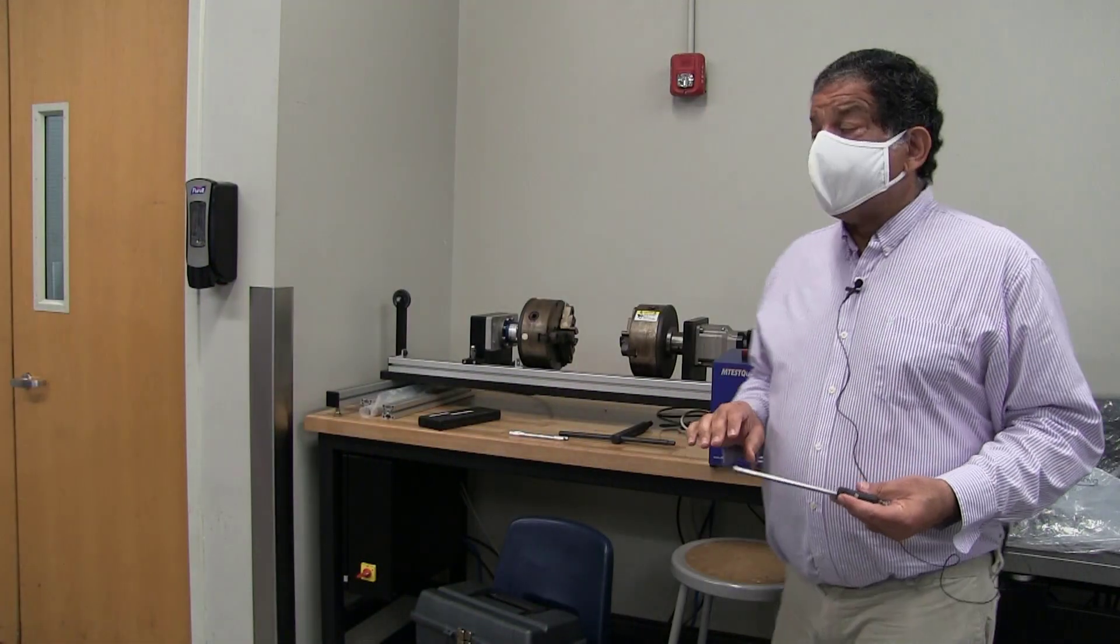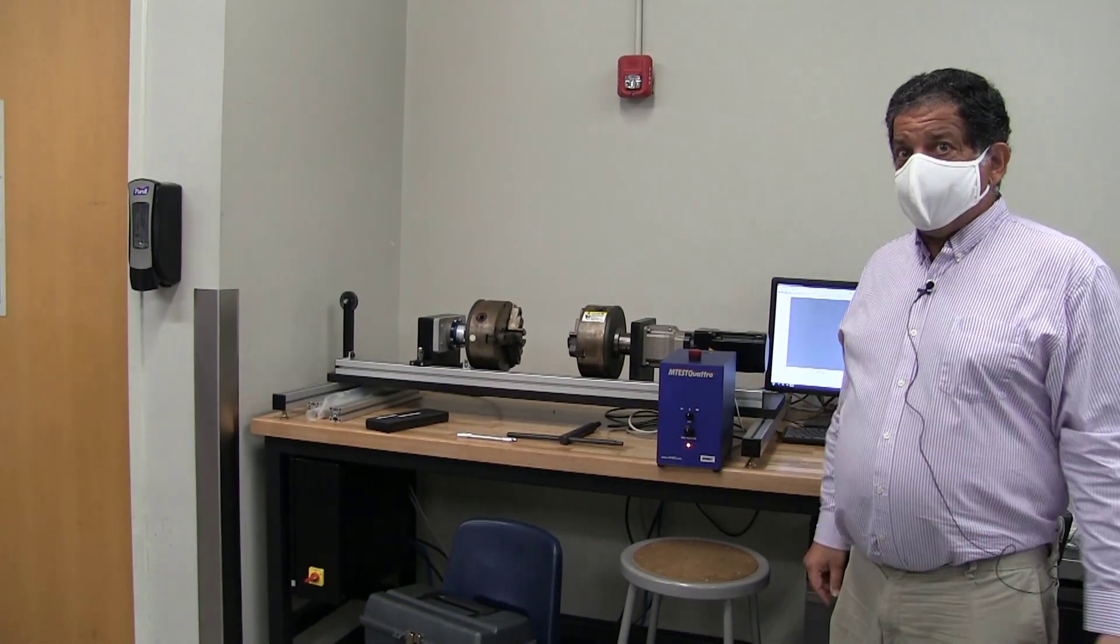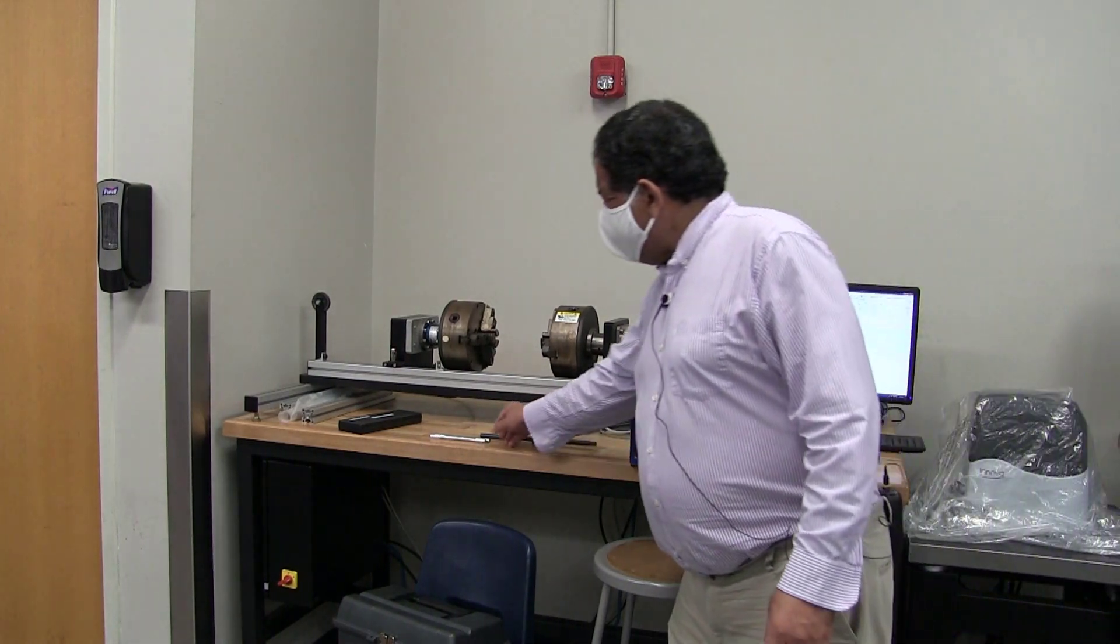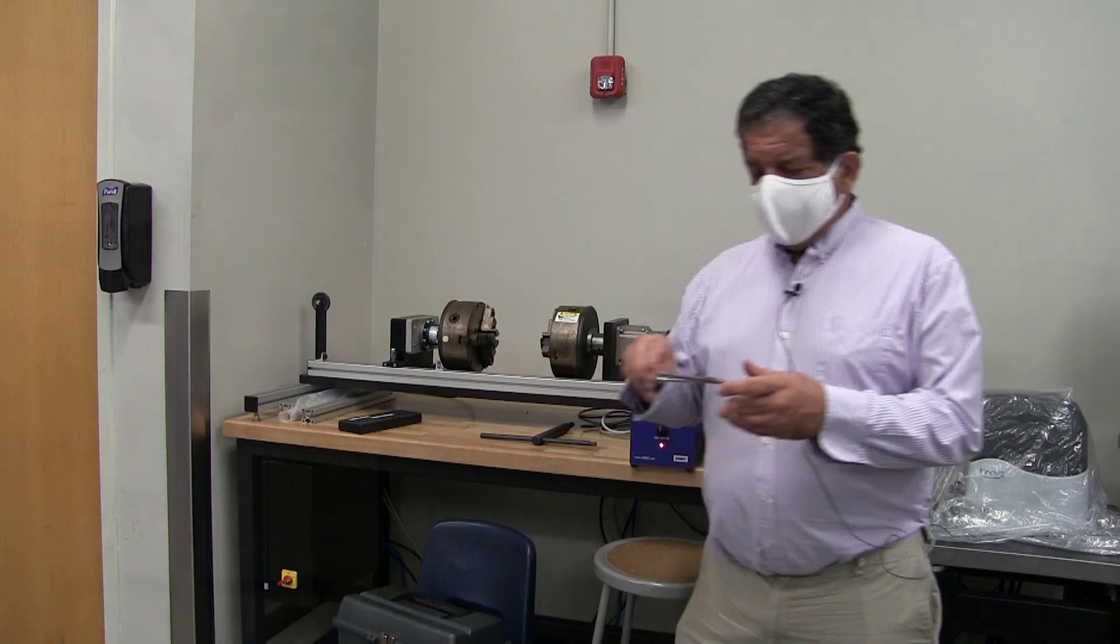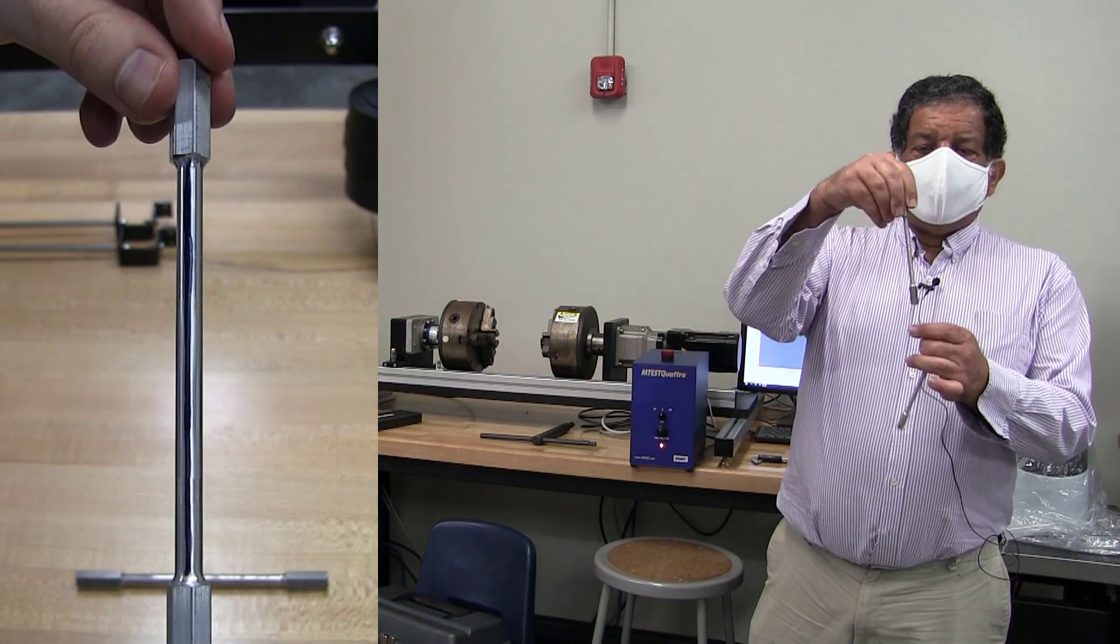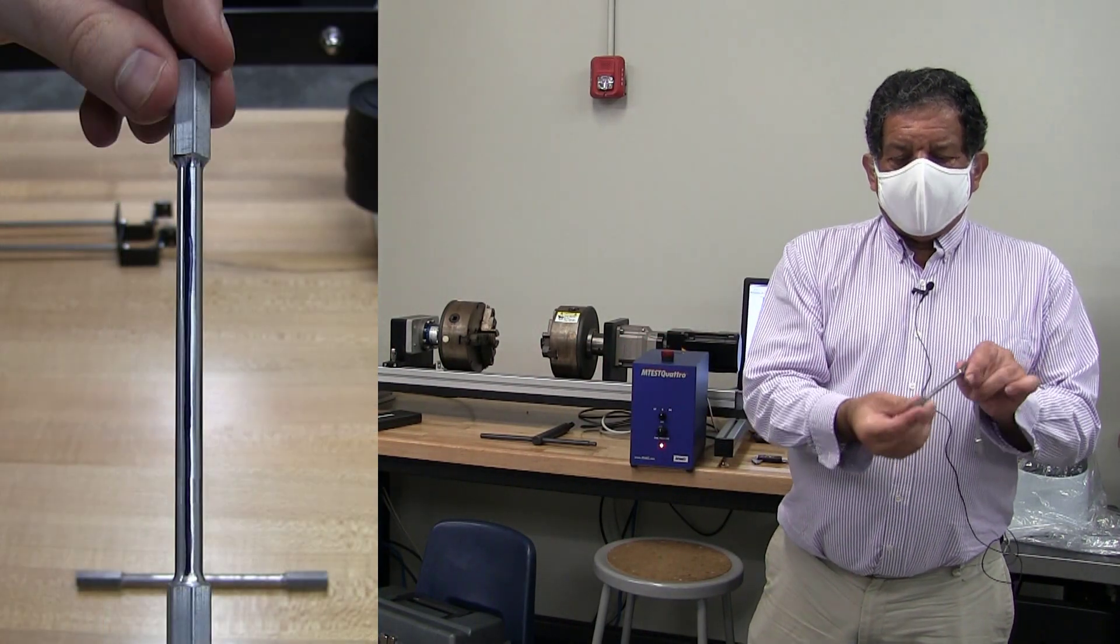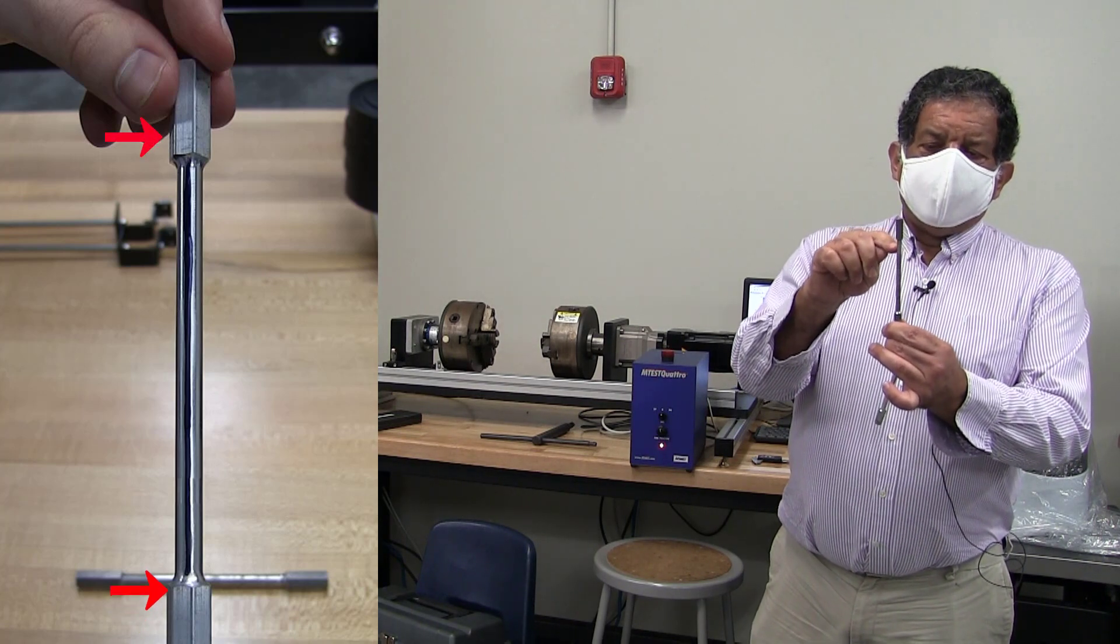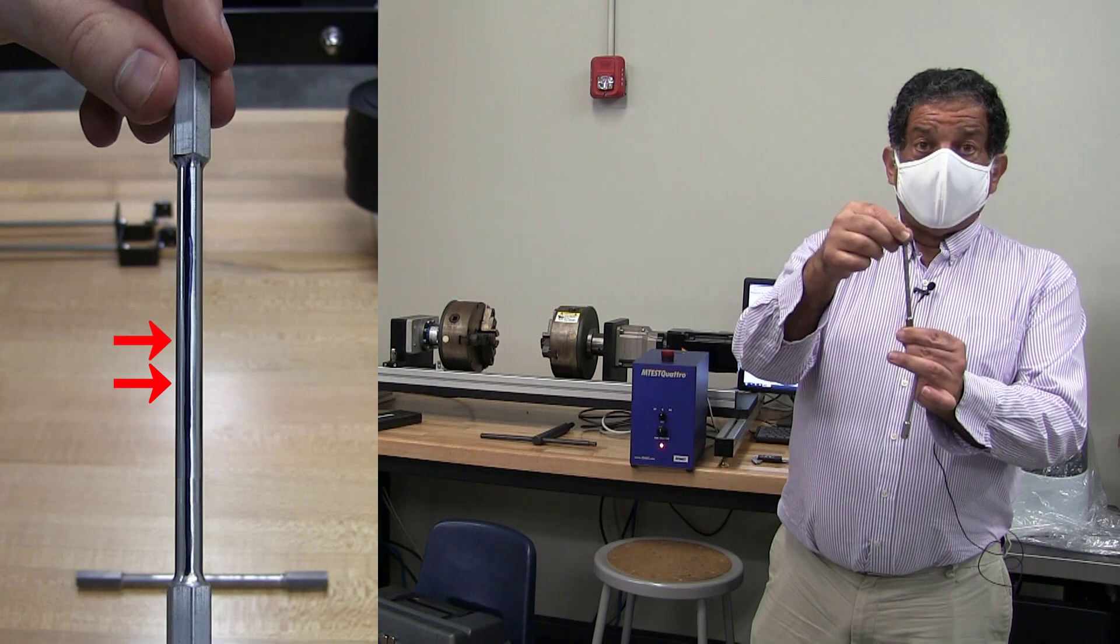Welcome to ME3501's torsion experiment. In this experiment, what we're going to be doing is we're going to take some solid cylindrical specimens. These are actually hexagonal cross section rod that has been lathed down to a solid cylindrical section.